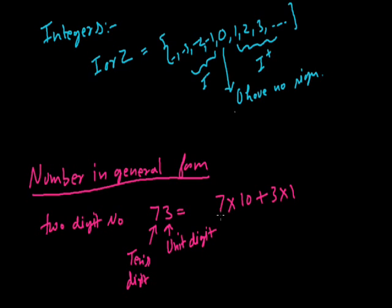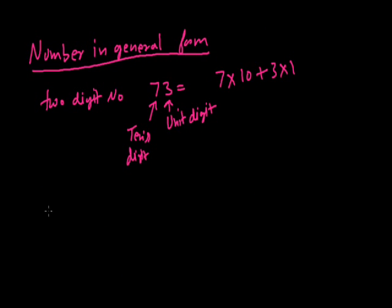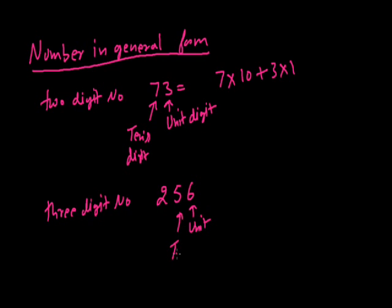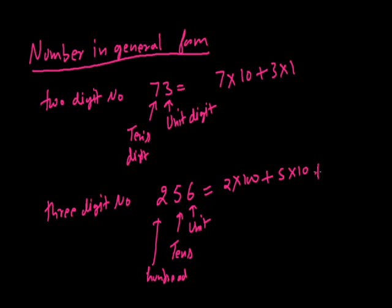73 can be written as 7 (tens digit) into 10 plus unit digit into 1. So if I have a 3 digit number, let's say 256 — so 6 is the unit digit, 5 is the tens digit, and 2 is the hundreds digit. And if I want to write in general form, I write the hundreds digit multiplied by 100, tens digit multiplied by 10, and the unit digit multiplied by 1. In this way we can write any number in general form.